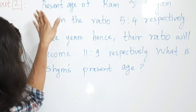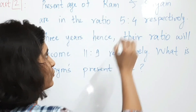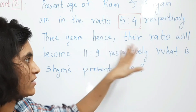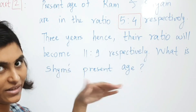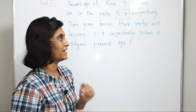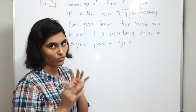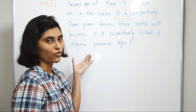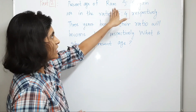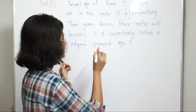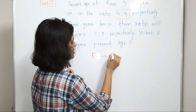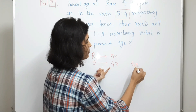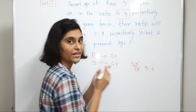Let's solve another question. The present ages of Ram and Shyam are in the ratio 5:4 respectively. 3 years hence, their ratio will become 11:9 respectively. What is Shyam's present age? In this question we're given the ratio of their ages. To convert this into equation form, take Ram's age as 5X and Shyam's age as 4X, so that the ratio of their ages is 5X to 4X, which is 5:4.